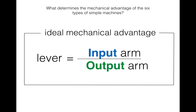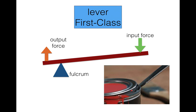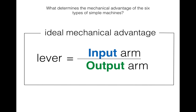That does it for levers. To quantify the ideal mechanical advantage, you divide the input arm by the output arm, or the input force by the output force. The longer the input arm, the larger that numerator will be, the larger your mechanical advantage, and the easier it will be. Going back to the first class lever — if you use a longer screwdriver to open a can of paint, that lever arm is much longer and you'll be able to apply much more output force. So the formula is input arm divided by output arm.